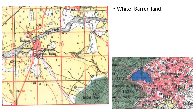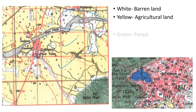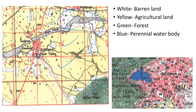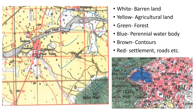Let's look at different colors. White — barren land. Yellow — agricultural land. Green — forested land. Blue — perennial water bodies. Brown — contour lines, which we have already learned about. Red — settlement, road, milestone; all these are written in red color. Abu, or Mount Abu, is a big settlement — you can see how large that settlement is.